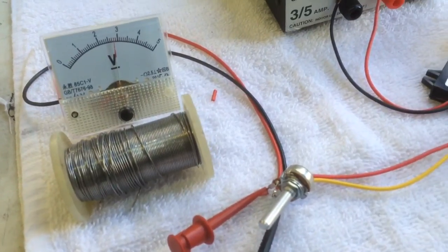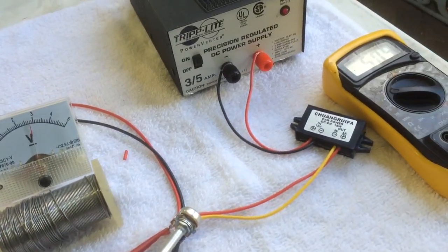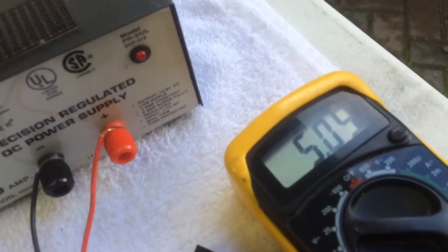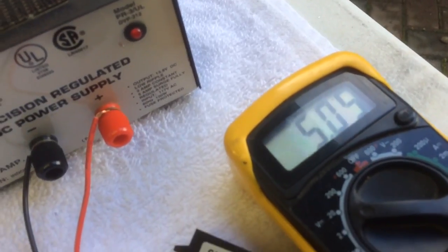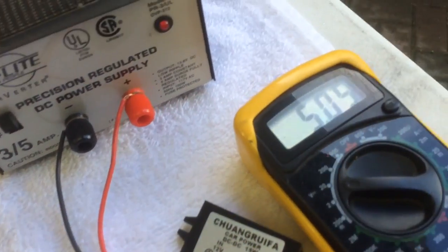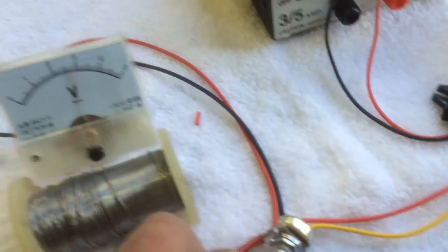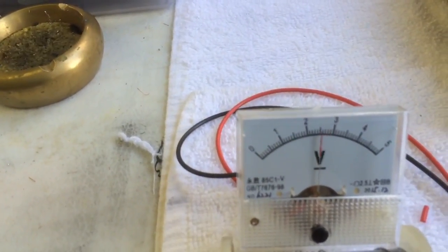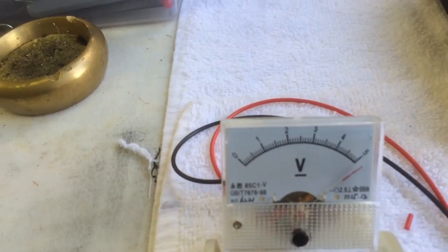This meter over here is measuring the output of the power supply, so it's 5.5 volts. When I turn this all the way up it's a little bit off scale, but we can fix that with the zero on the meter.